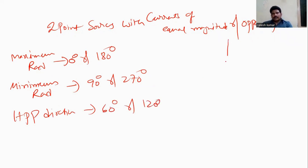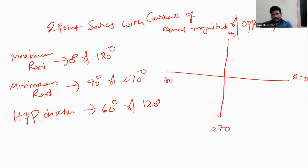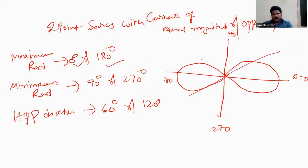To summarize: for two point sources with currents of equal magnitude and opposite phase, maximum radiation occurs at 0 degrees and 180 degrees, minimum radiation at 90 degrees and 270 degrees, and the half-power point directions are at 60 degrees and 120 degrees. Based on this, we draw the radiation pattern graph.